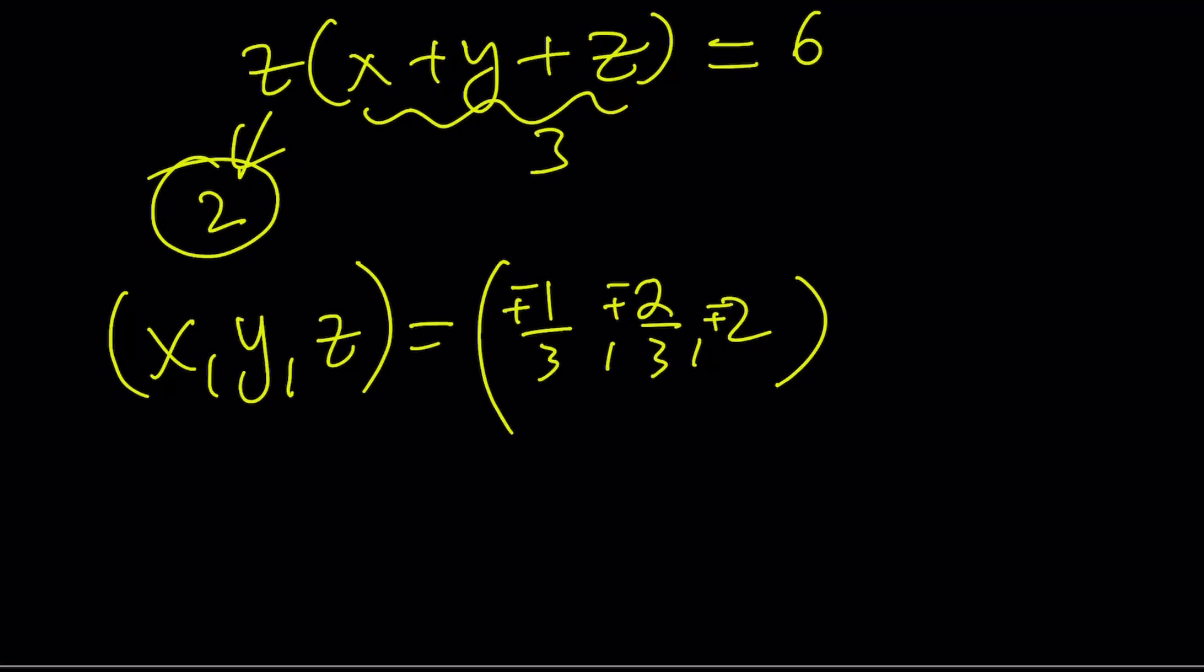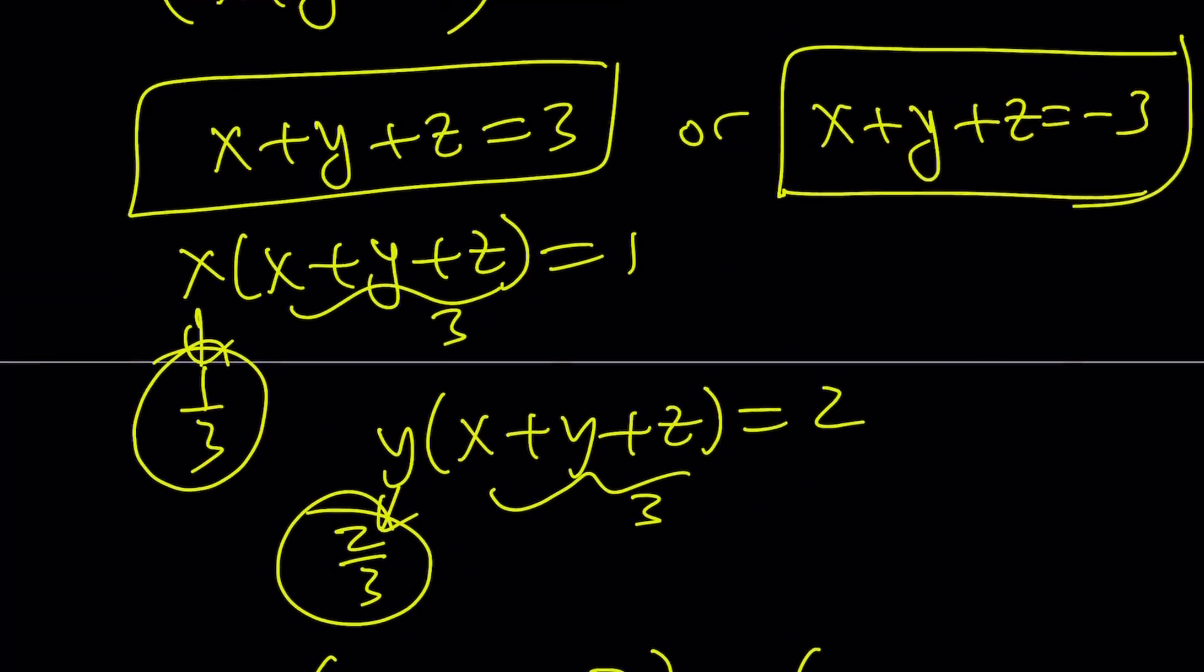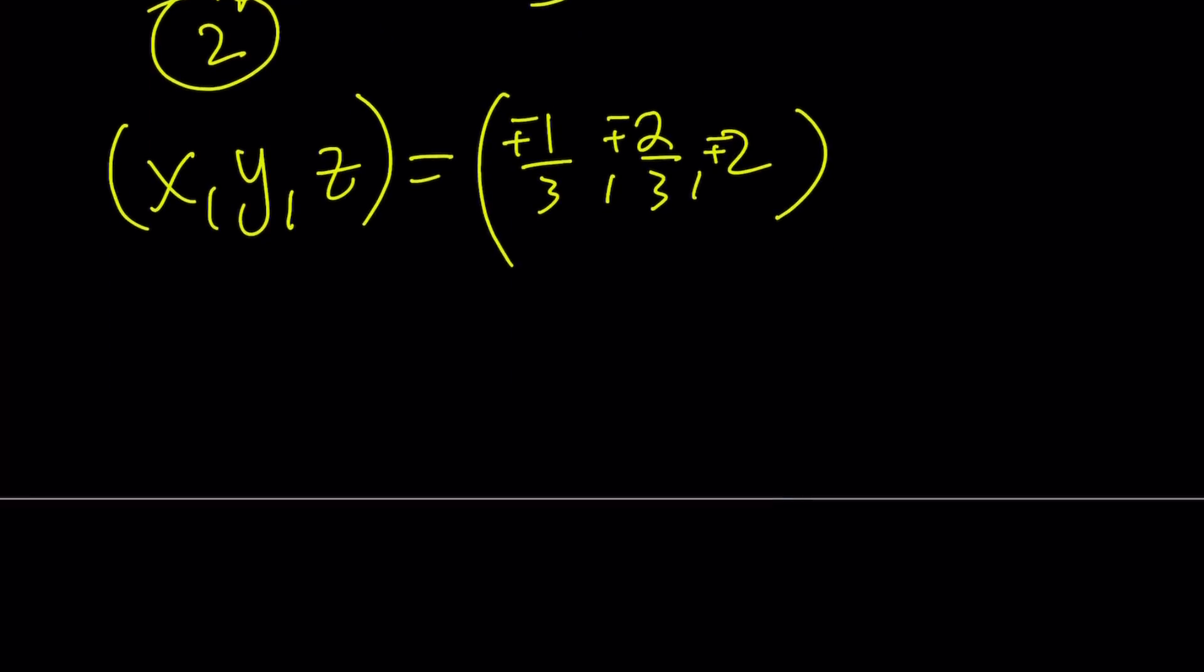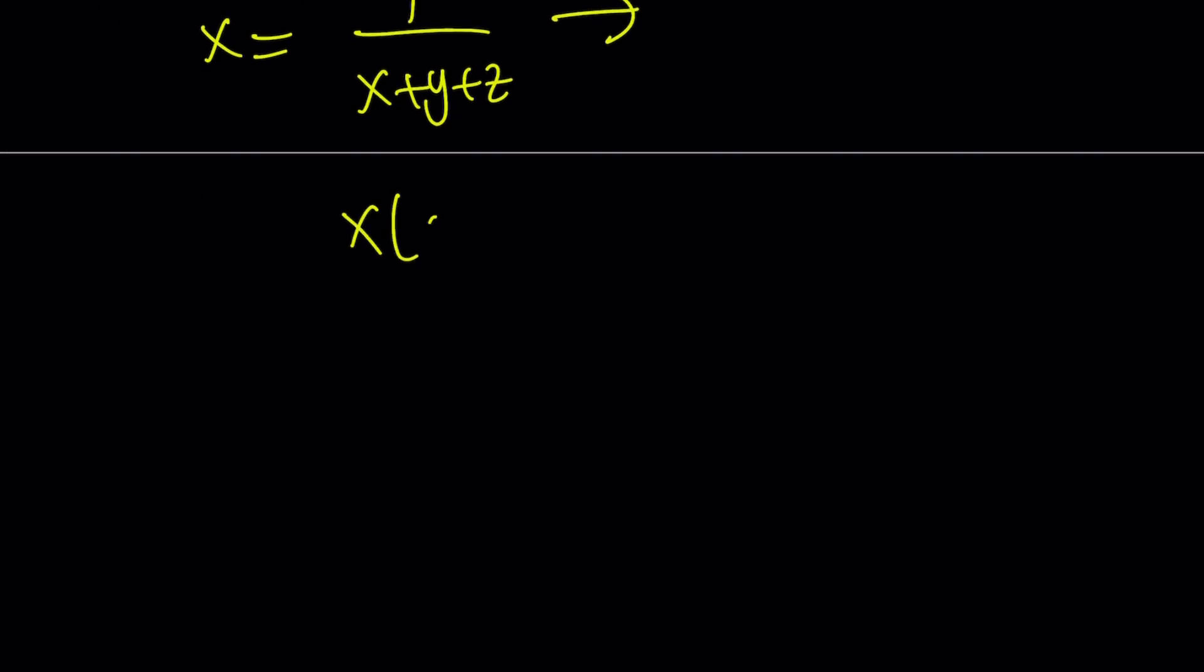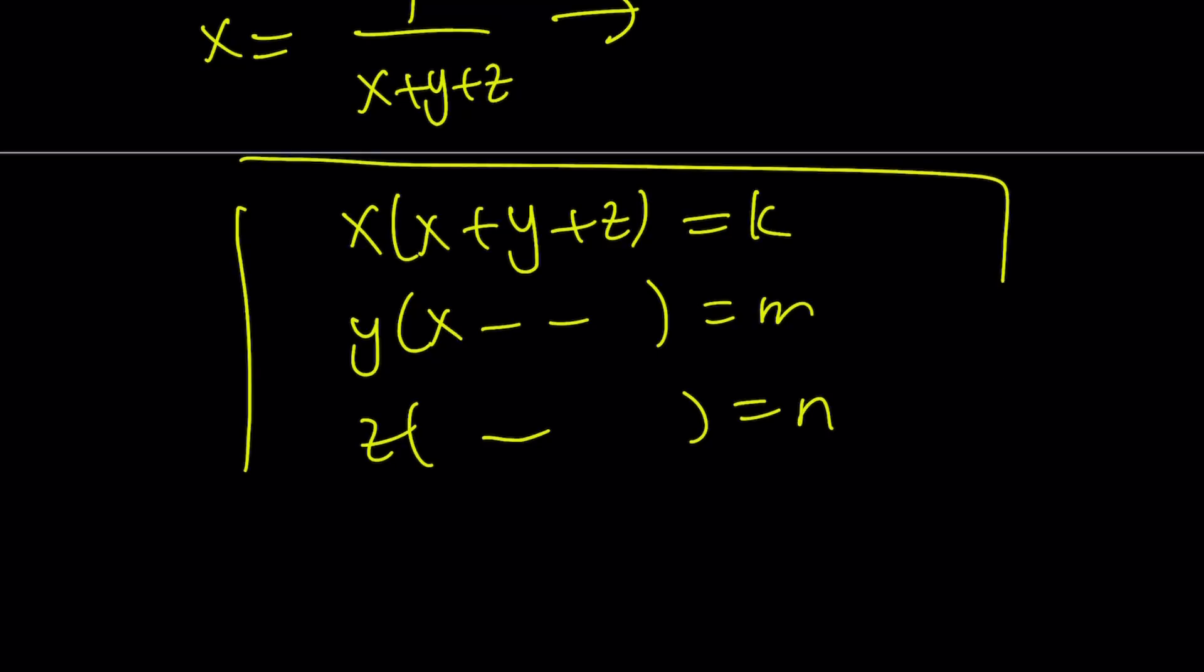Now, here's another approach that you can use with the second method. Notice that we can write x as 1 over x plus y plus z, because x times x plus y plus z is equal to 1. So once you find the value of x plus y plus z, then you can find the value of x from here. By the way, you could also modify this equation and call each one of these like k, and then the second one like m, and the third one as n, and this is going to be a parametric system.